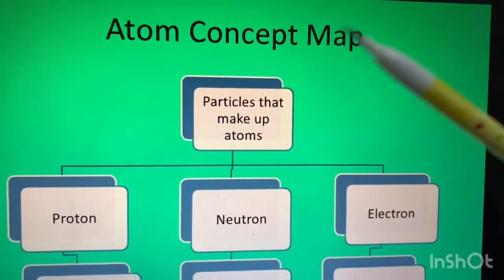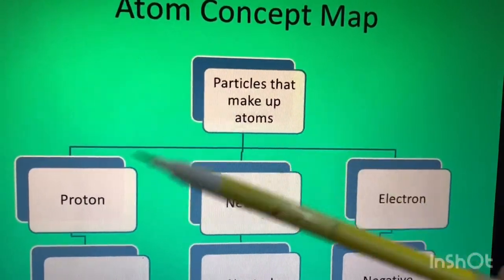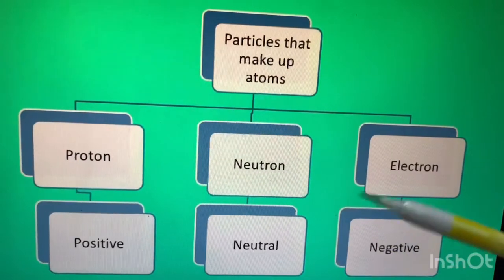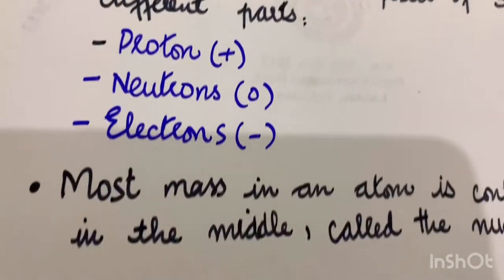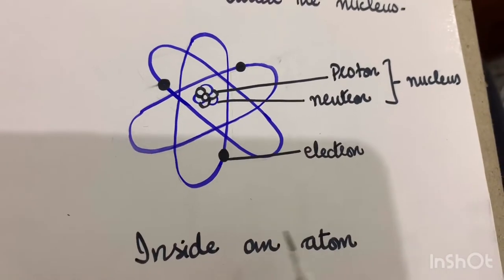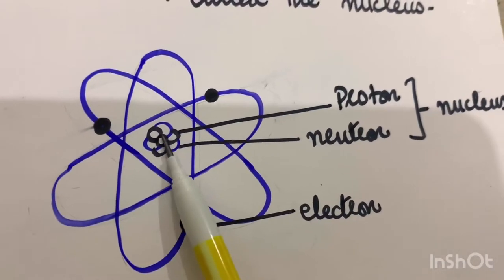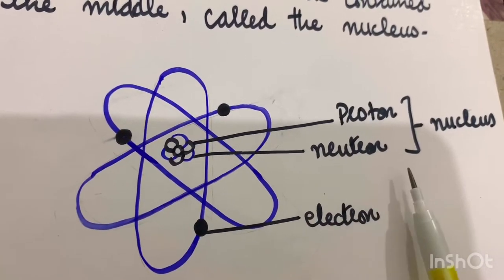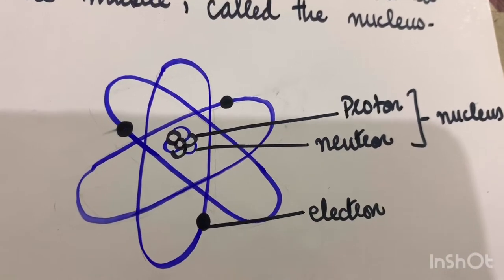The particles that make up atoms are three: proton, neutron, and electron. Protons are positive, neutrons are neutral, and electrons are negative. Most mass in an atom is contained in the middle, which is the nucleus. Looking at the diagram of the inside of an atom, the electrons surround the nucleus while protons and neutrons are both carried in the nucleus.